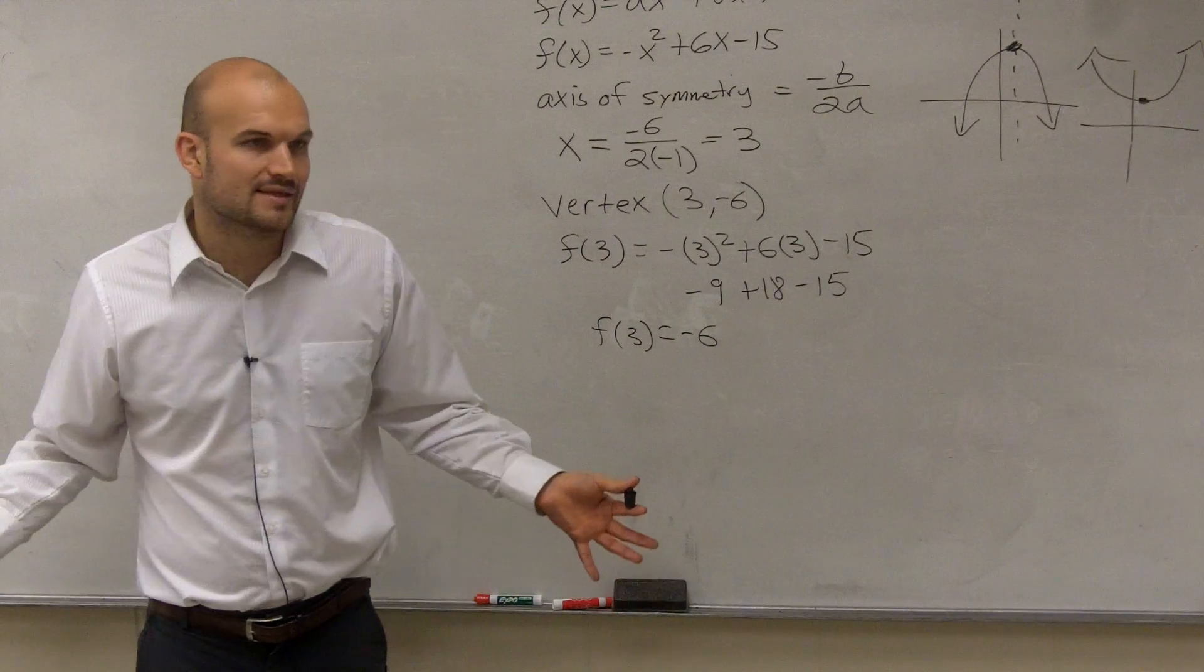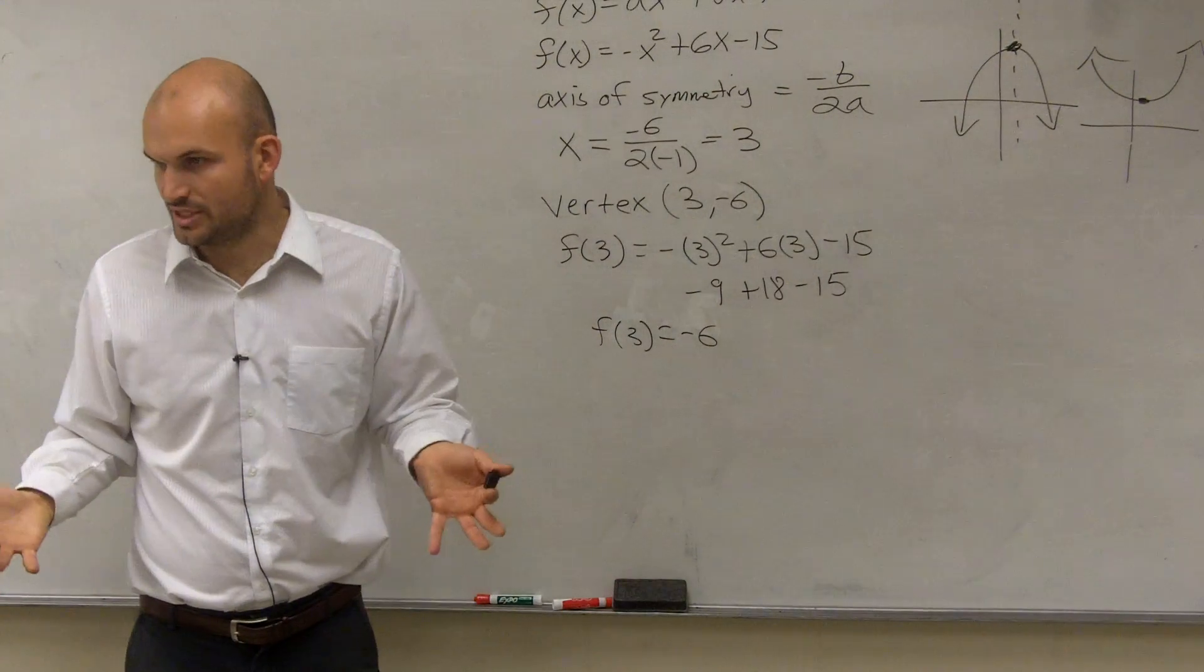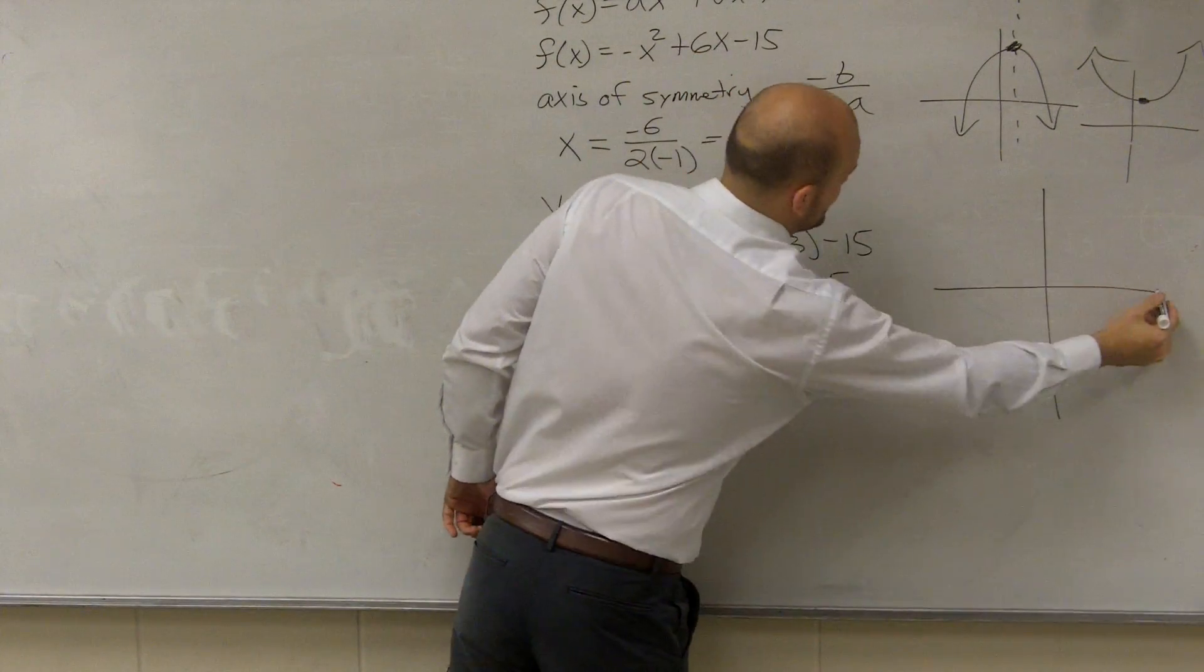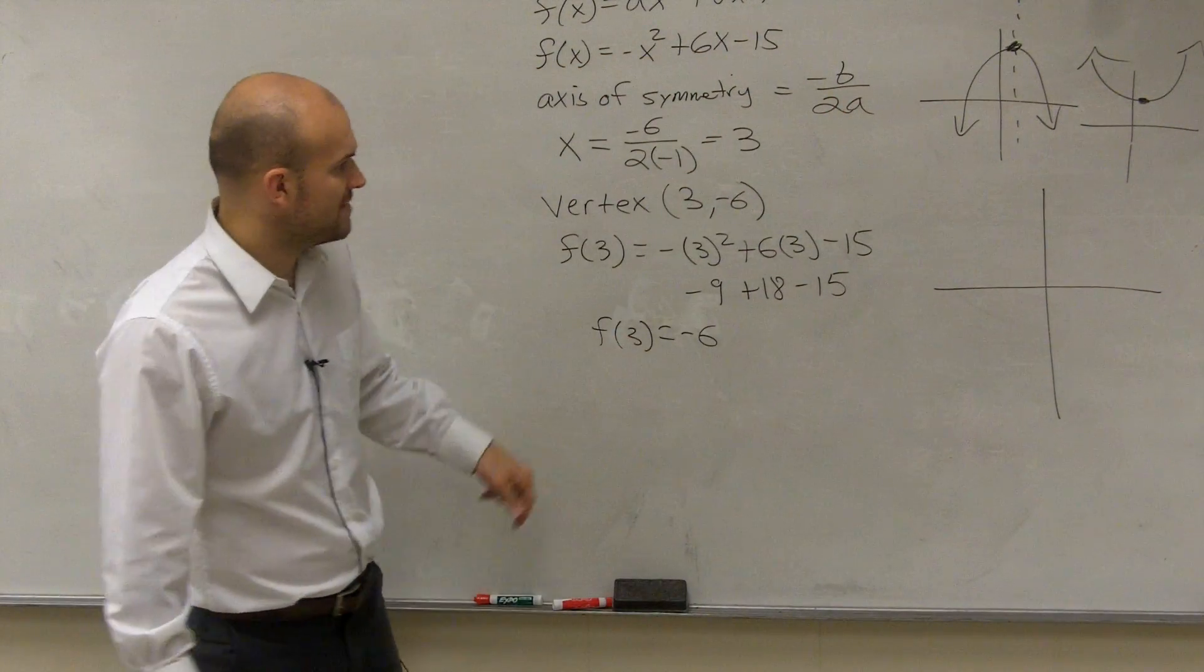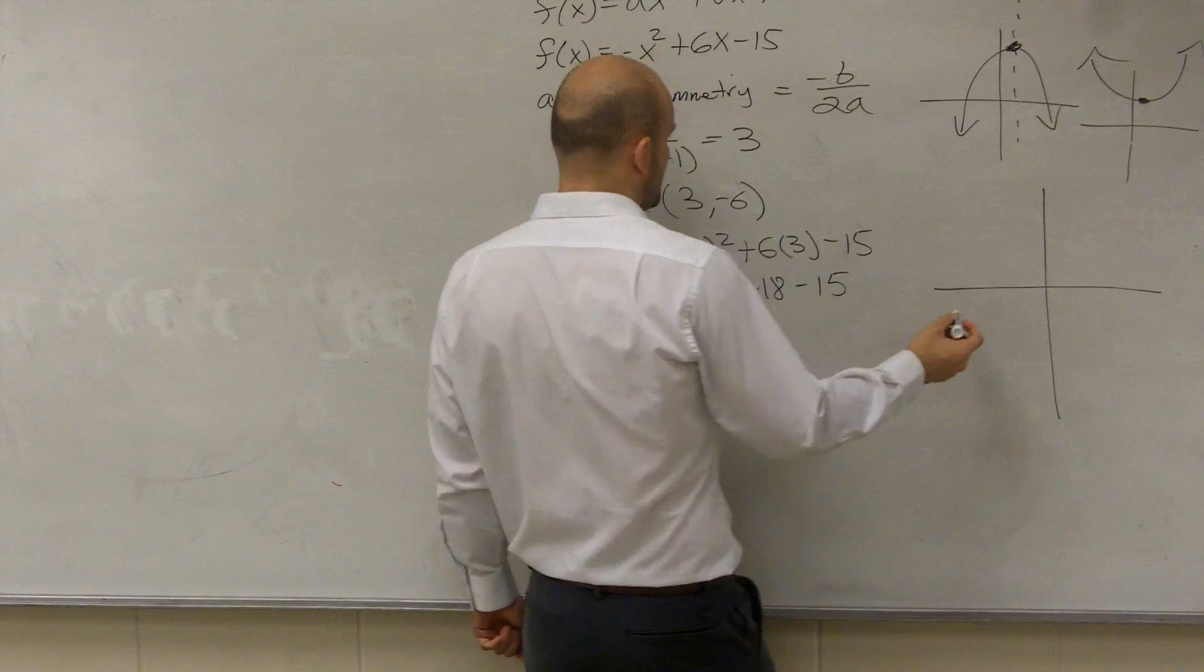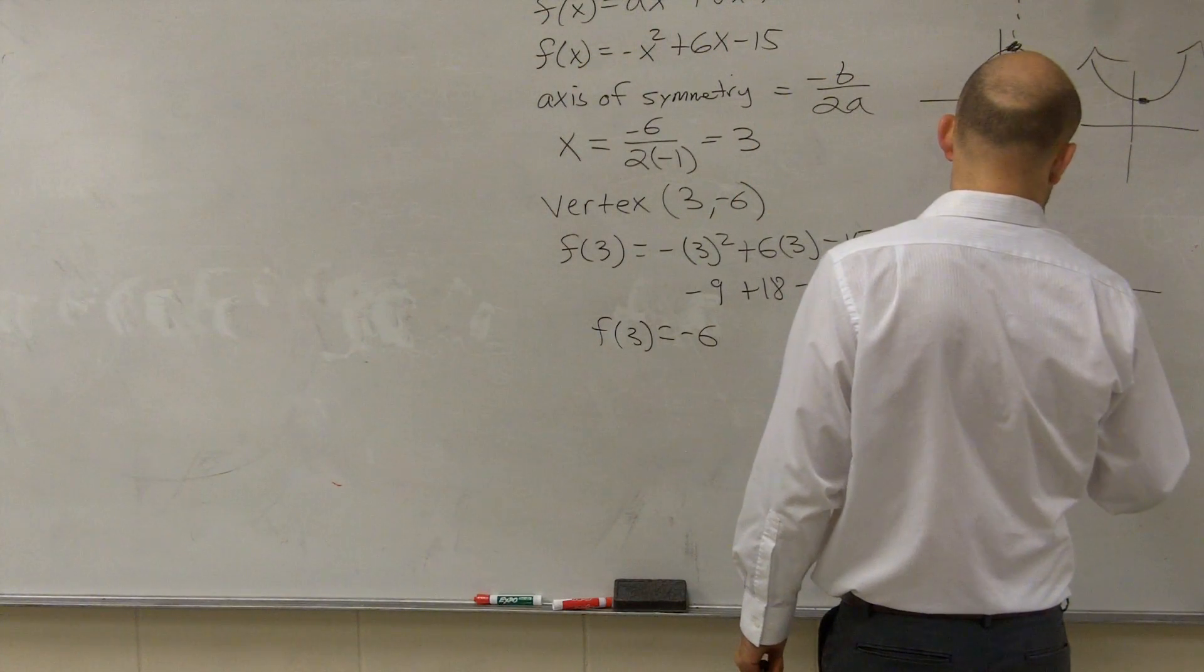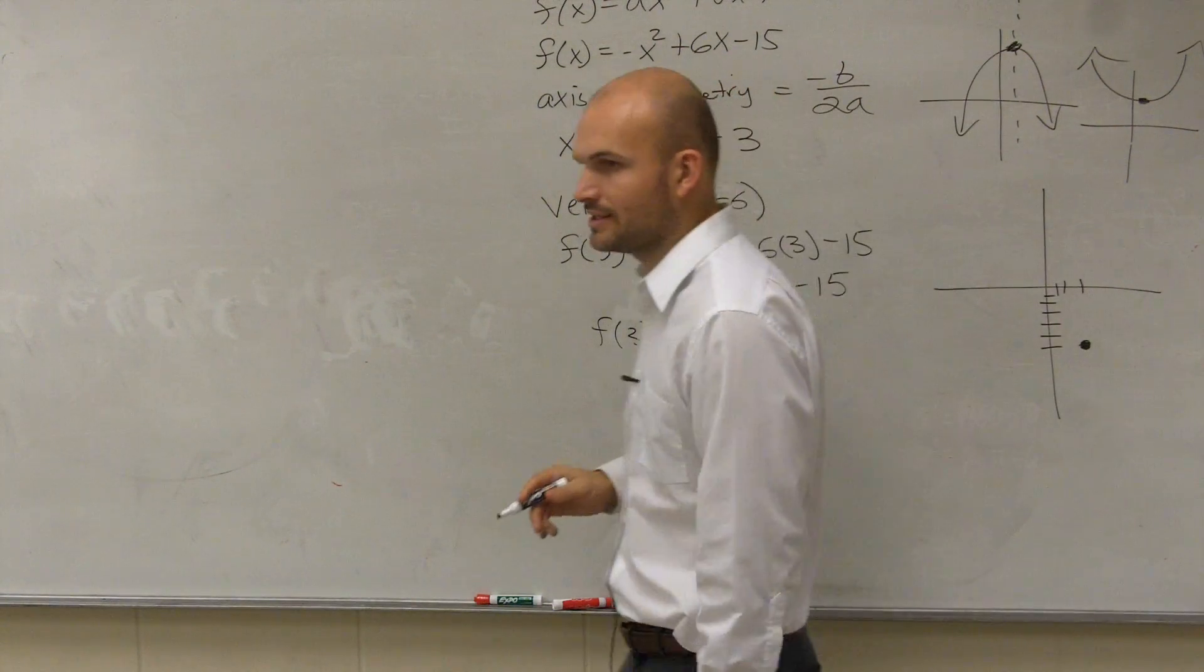So, if I was going to plot this, ladies and gentlemen, I don't really know exactly what this graph looks like. But I know, right now, that I have a point. My vertex is at 3, negative 6. 1, 2, 3, 1, 2, 3, 4, 5, 6. Okay? So, my point's right there.